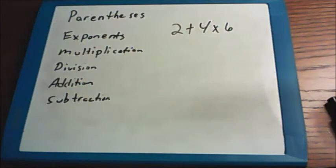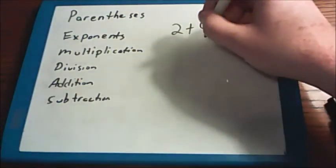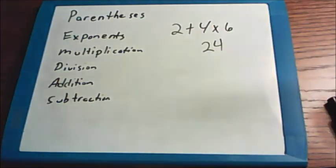But there is a multiplication step. We have 4 being multiplied times 6, so we will do that step first. 4 times 6, of course, is 24. So we will put the answer to that where the 4 and the 6 used to be.